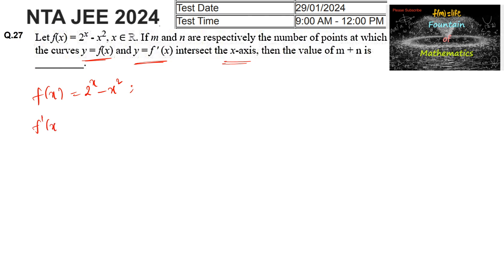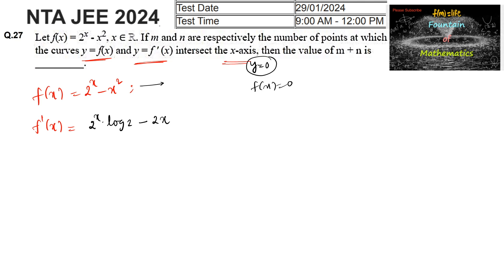Let us differentiate: f'(x) = 2^x · log2 - 2x. It is given that the curve y = f(x) intersects the x-axis, which means we consider y = 0, that is f(x) = 0.